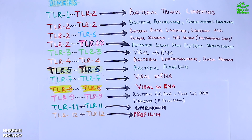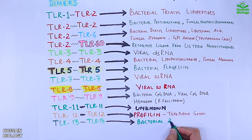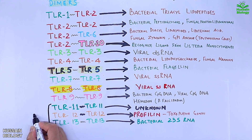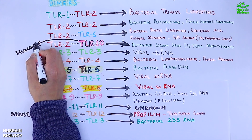TLR12 recognizes profilin from Toxoplasma gondii. Finally, the TLR13 homodimer recognizes bacterial 23S RNA. An important note: TLR11, TLR12, and TLR13 are present in mouse only, whereas TLR10 is functional in humans only.